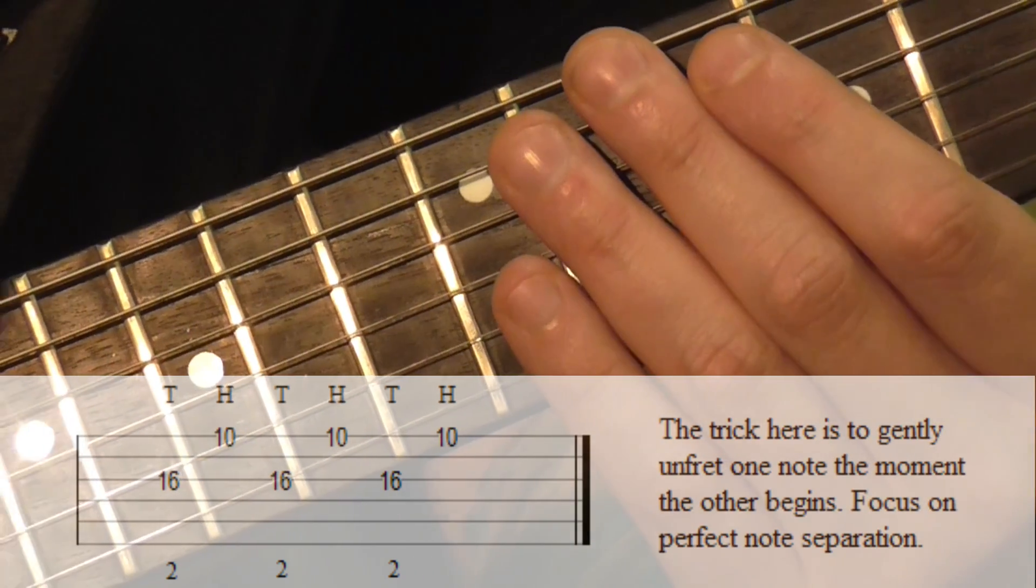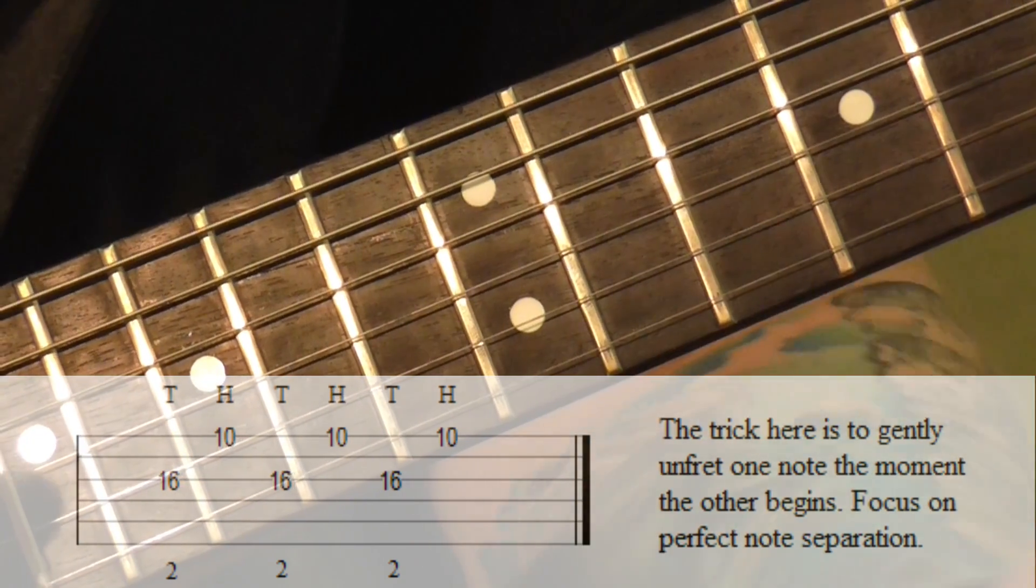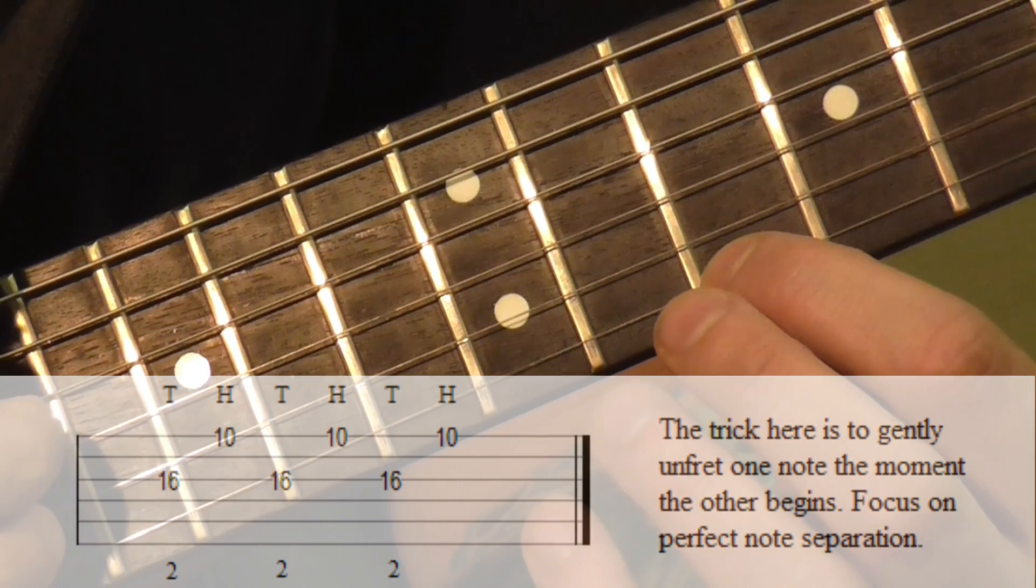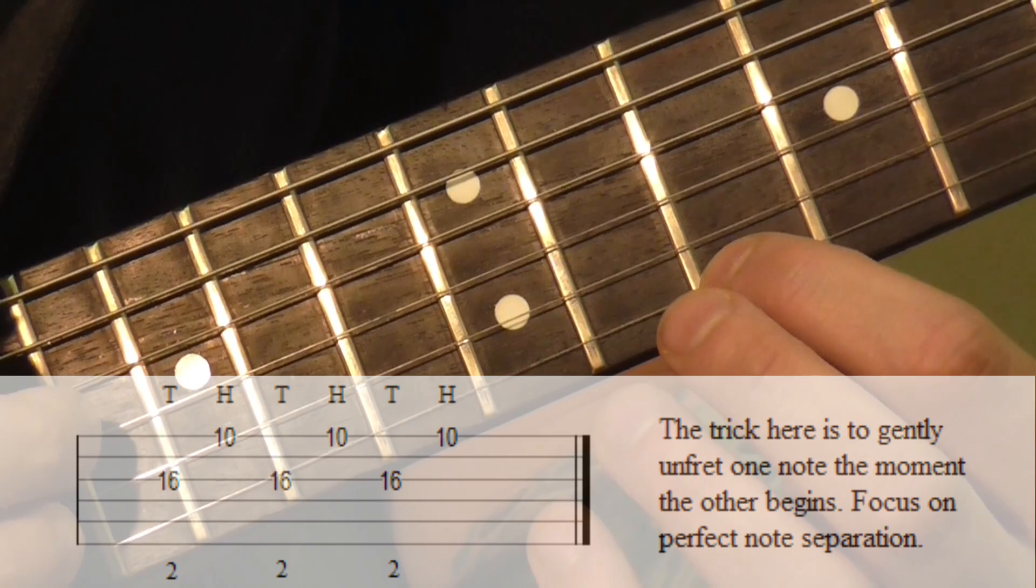In order to come back, it's just the same the other way around. So you're playing the 10th fret, and then you release it, you unfret it as soon as you do the tap note.